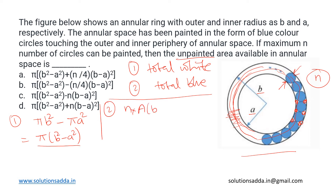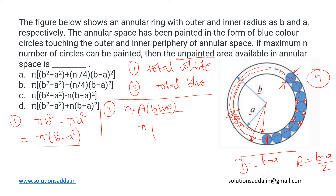For part two, the total blue area is n times the area of a single blue ball. To find the area of a single blue ball, we need its radius. The diameter of a blue ball spans from the inner to the outer circle, so it equals b − a. Therefore the radius is (b − a)/2, and the area of a single blue ball is π × ((b − a)/2)² = π/4 × (b − a)². Multiplying by n gives the total blue area as nπ/4 × (b − a)².